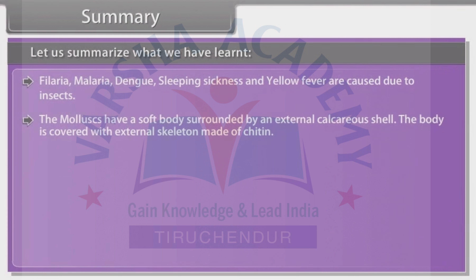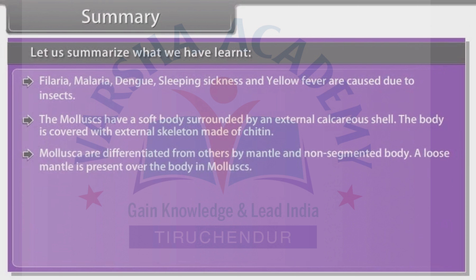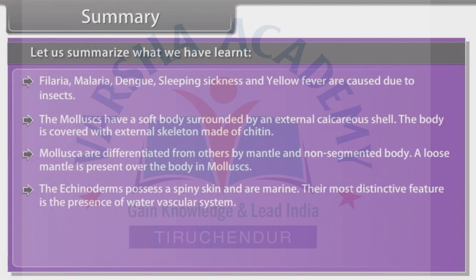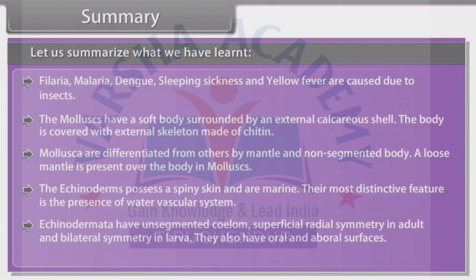The mollusks have a soft body surrounded by an external calcareous shell. Mollusca are differentiated from others by the mantle and non-segmented body — a loose mantle is present over the body in mollusks. The echinoderms possess spiny skin and are marine. Their most distinctive feature is the presence of a water vascular system. Echinodermata have unsegmented bodies, superficial radial symmetry in adults, bilateral symmetry in larvae, and also have oral and aboral surfaces.